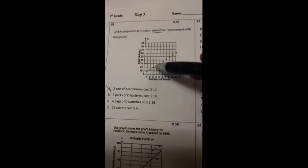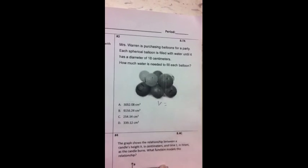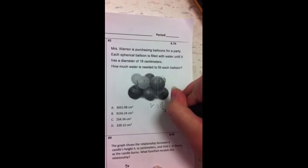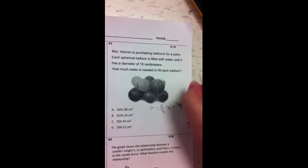B says three packs of D batteries cost $18. So let's look at three. And it looks right below 20. D equals 4 over 3 pi R squared.